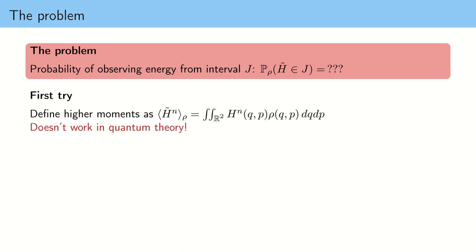This is intuitively clear because if I can compute the mean value of energy squared, I can already compute the variance of the probability distribution of energy and determine whether something is or is not an eigenstate. So these higher moments are equivalent to computing the probabilities, and one might say: why don't you just compute this by integrating the n-th power of the Hamiltonian against the state?